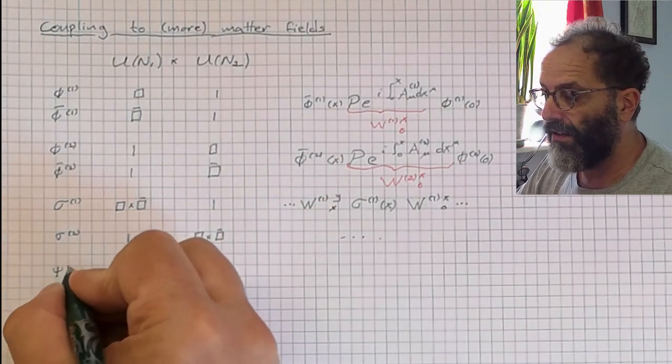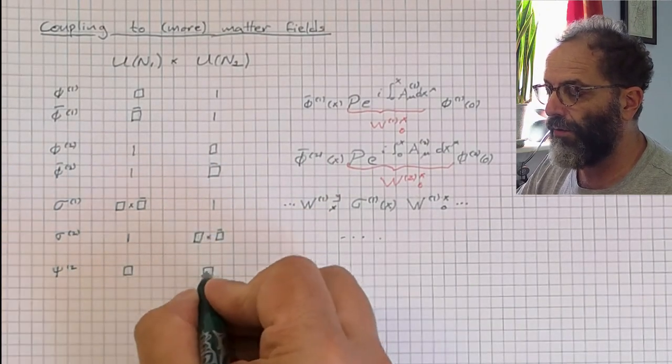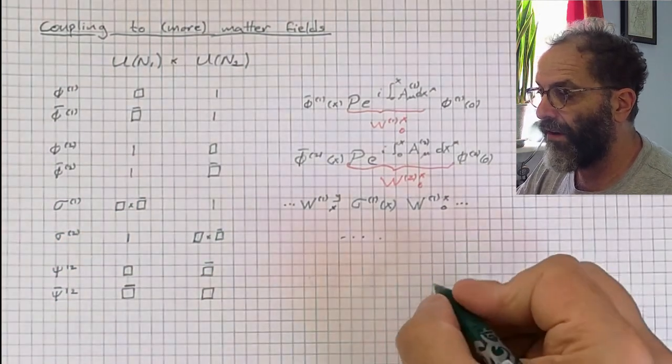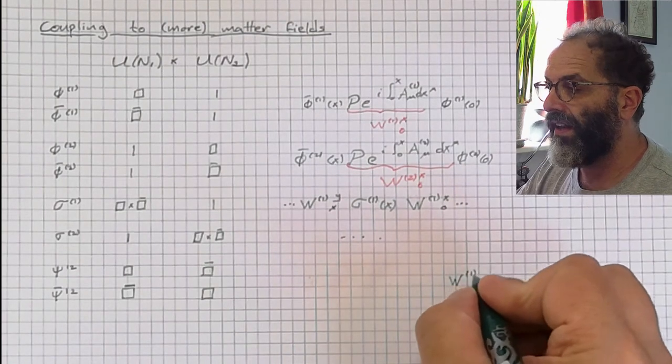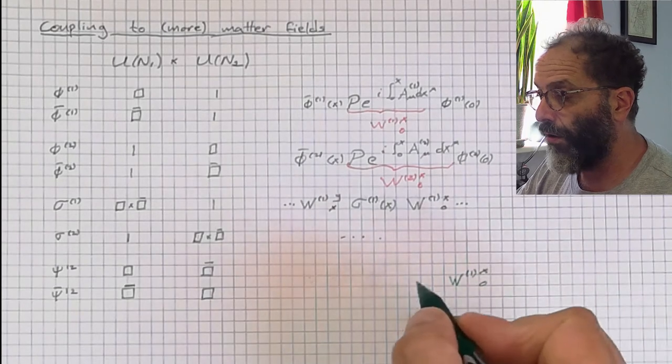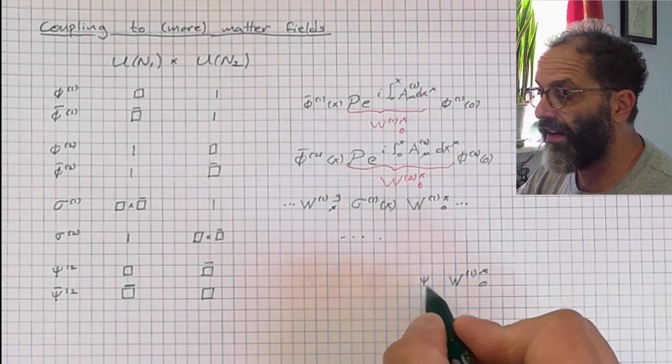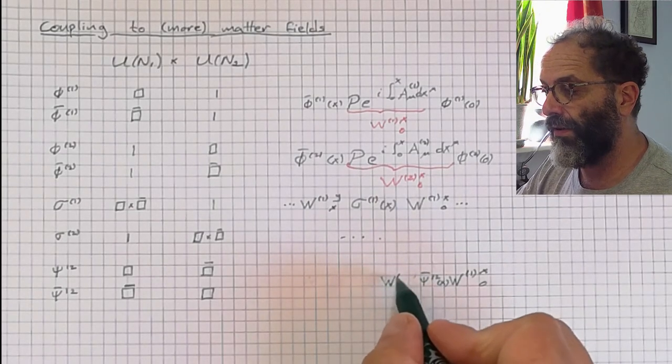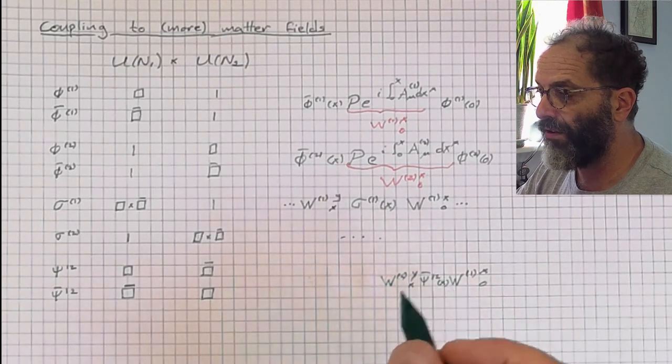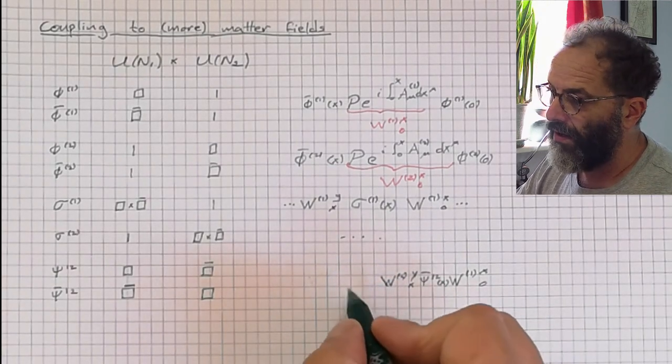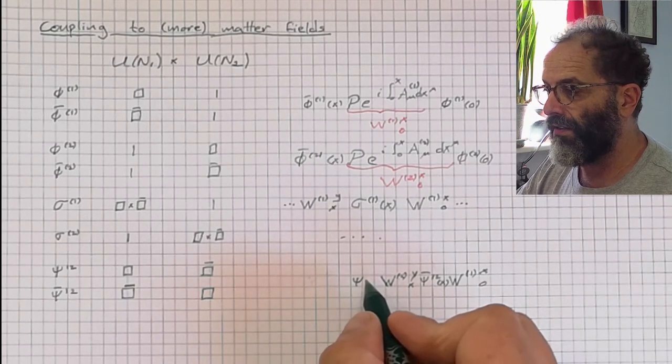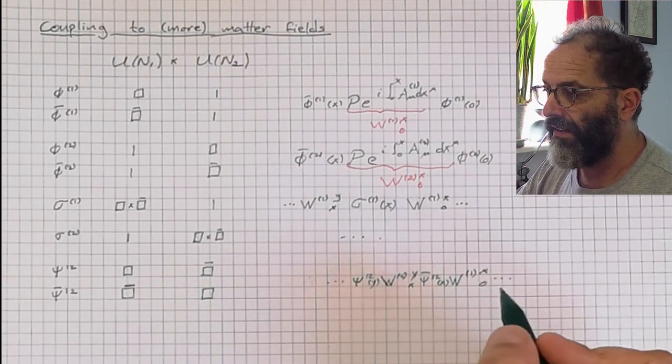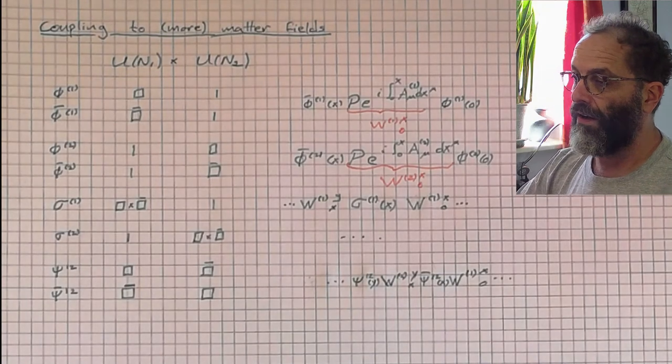We can also have fields in the bifundamental representation, so the fundamental of U(N1) and the anti-fundamental of U(N2), or vice versa. Now if we start with a Wilson line in the first group going from 0 to x, we can attach there the anti-fundamental field of the first group, or we can attach there the adjoint of the first group, or we can attach the bifundamental psi12 bar, but in that case we need to continue with another Wilson line, this time of the second group, W2 from x to y, and then we have to attach sigma2, or phi2 bar, or psi12, and continue like that. And we can close it after an even number of psi.